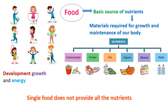Food is the main thing — it is the basic source of nutrients. Nutrients are the materials required for growth and maintenance of our body. Nutrients include many things such as fruits, vegetables, cereals, eggs, meat, fish, dairy products, etc. These all come under five components of food along with water, such as carbohydrate, protein, fat, vitamins, and minerals.